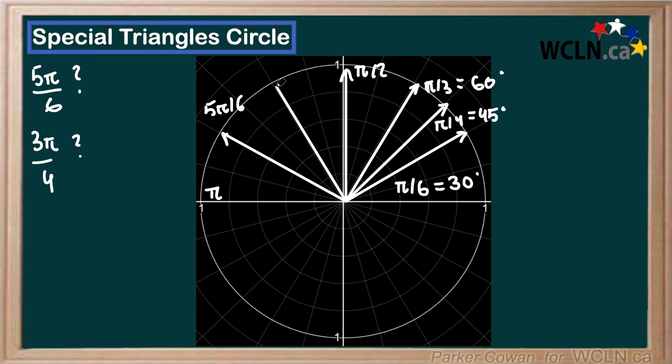And we go 45 over again for the third time. And there we have it 3 pi over 4. So using this method, we can really just continue going around the circle.